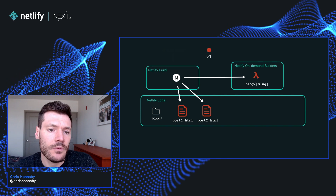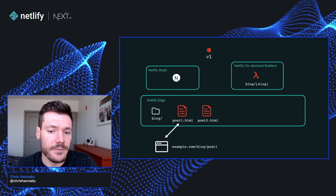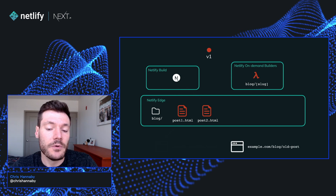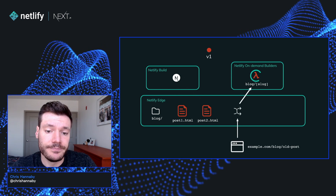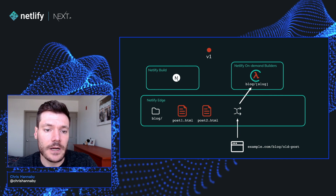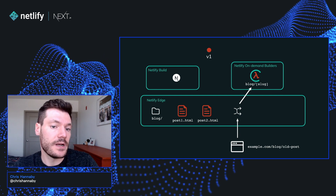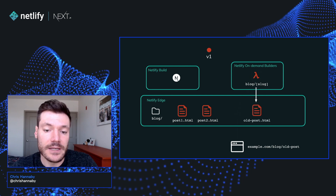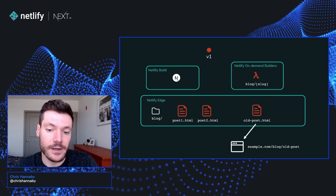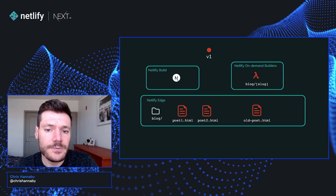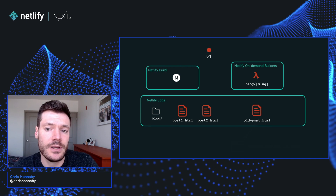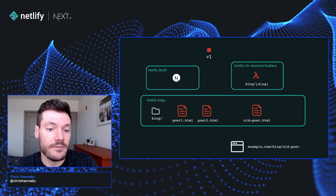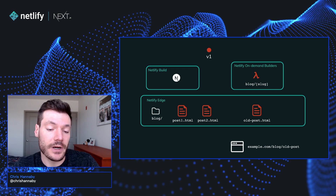Now when we kick off a build, we're going to statically generate our critical pages as we saw before, but we'll also deploy builder functions that are going to handle any of the deferred pages. Requests for critical pages will be served directly from the edge, and any requests that don't match those pages will be redirected to the builder function. The builder function runs the same code that we saw in our main build, and generates those pages on demand. They get stored in the edge and returned to the browser.